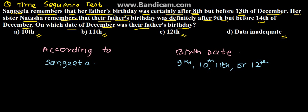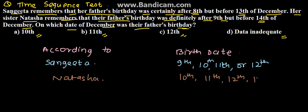According to Natasha, the birthday is after 9th, so that gives us 10th, 11th, 12th, and 13th — up to before 14th. So from both conditions combined, the common dates are 10th, 11th, or 12th.